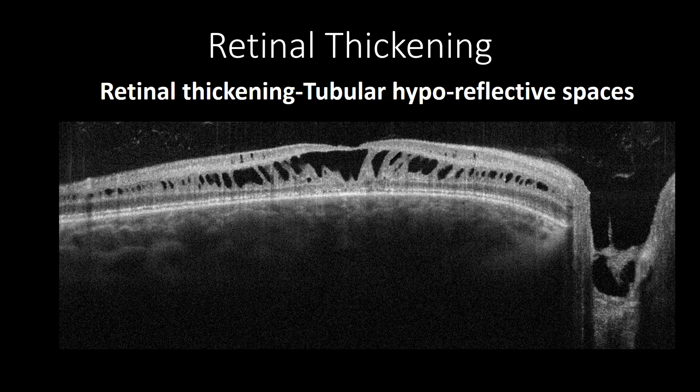This case of X-linked retinoschisis shows an increase in retinal thickening with tubular cystic formation. As the disease progresses, those tubular cystic spaces may coalesce.